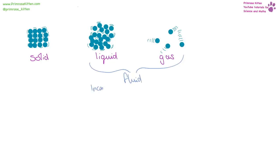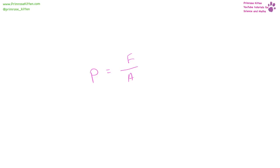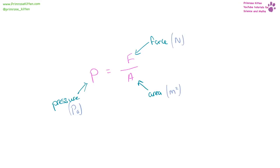A fluid can be either a liquid or a gas. Liquids are incompressible, whereas gases are compressible. Pressure equals force over area. The units for pressure are pascals, force is newtons, and area is meters squared. Watch out — exam questions sometimes use newtons per meter squared or newtons per centimeter squared for pressure; if they do, give your answer in the same format.